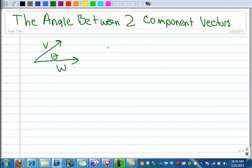So if I've got a vector v and a vector w, theta is the angle between them. And for this example, we're going to say vector v, its components are negative one and four, and vector w, its components are going to be one and three.